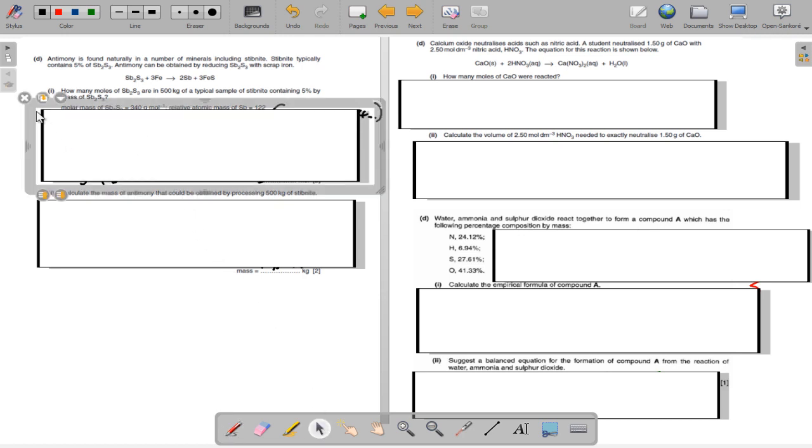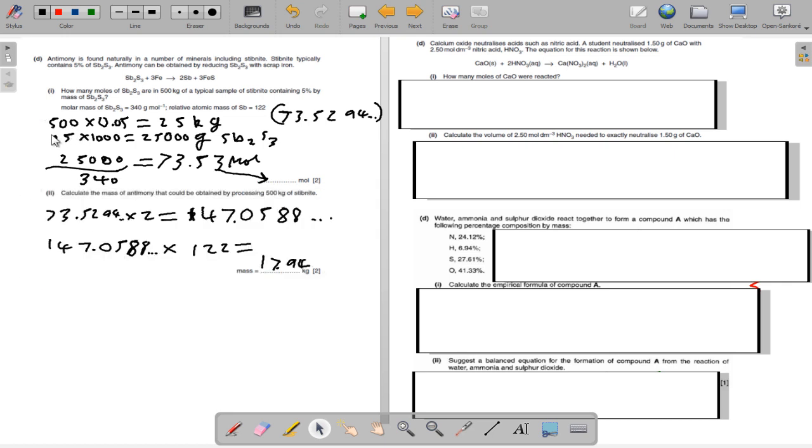Going through the answers now. 500 times 0.05 is 25 kilograms, finding 5% of 500 kilograms. Comparing that to grams, we get 25,000 grams of SB2S3. Then dividing that by 340, we get 73.53 moles. Using the accurate calculator data display, 73.5294 times 2, we get 147.0588 moles. Then times that accurate value by 122, we get 17.94 kilograms.